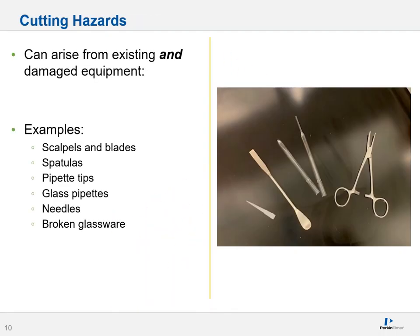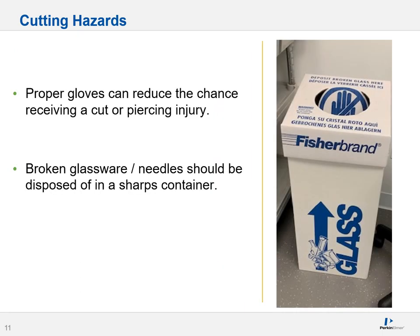Cutting hazards are also quite frequently found in labs and can arise from existing and sometimes damaged equipment. For instance, scalpels, blades, spatulas, pipette tips, glass pipettes, needles, and broken glassware are all examples of potential cutting hazards — also sometimes called piercing hazards. Using appropriate gloves can significantly reduce the chance of receiving a cut or piercing injury. Please keep in mind that broken glassware, needles, and equivalent items should be disposed of in an appropriate sharps container. Please don't throw them into regular trash.